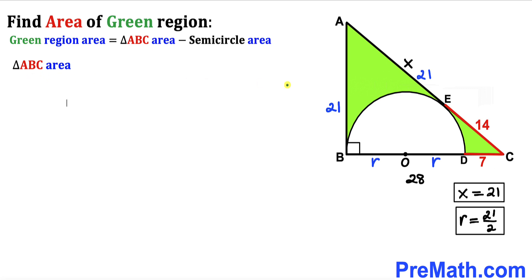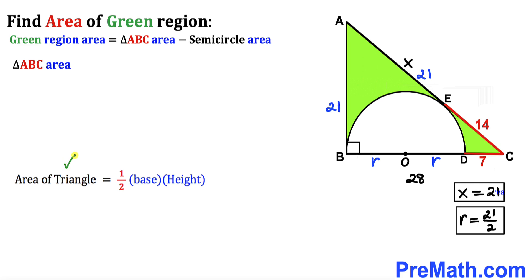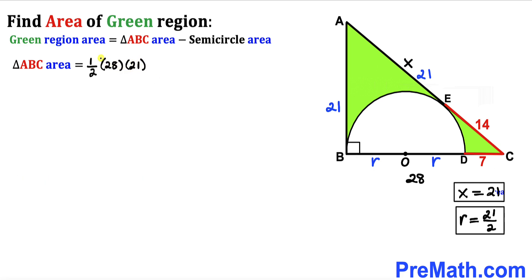Calculating the area of triangle ABC using the formula: area = ½ × base × height. The base is 28 and the height is 21, so the area = ½ × 28 × 21 = 294 square units.